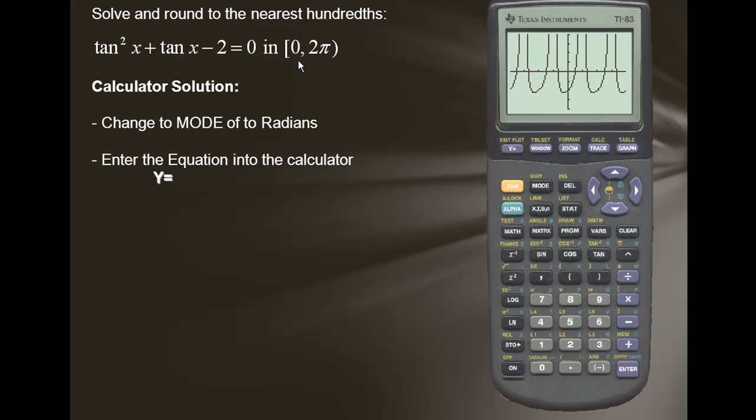We want the interval from 0 to 2π, so we'll press window. We'll change our x minimum to 0. I'll press enter. I'll change my x max to 2π. I'll press enter. I'll leave everything else the same, and now I'll regraph.